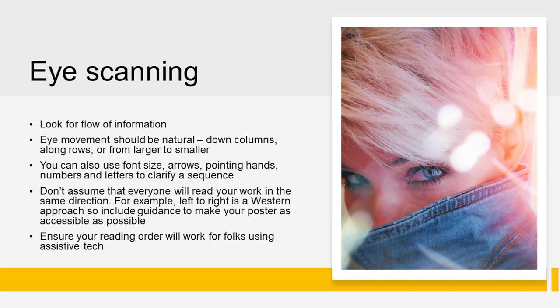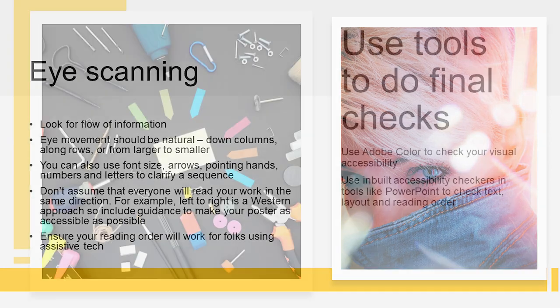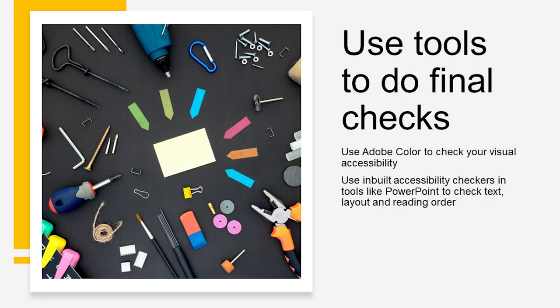For example, with posters, don't assume that everyone will read your poster from left to right — this is a Western approach, so include guidance to make sure your poster is as accessible as possible. And don't forget those final checks: use Adobe Colour to check your visual accessibility, and use inbuilt accessibility checkers in tools like PowerPoint to check text, layout and reading order.